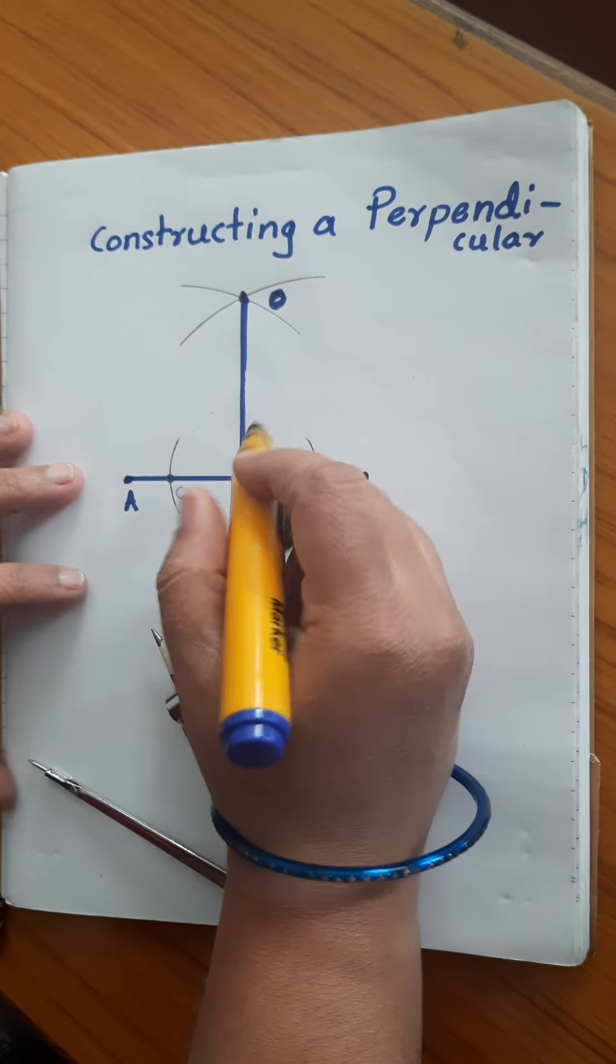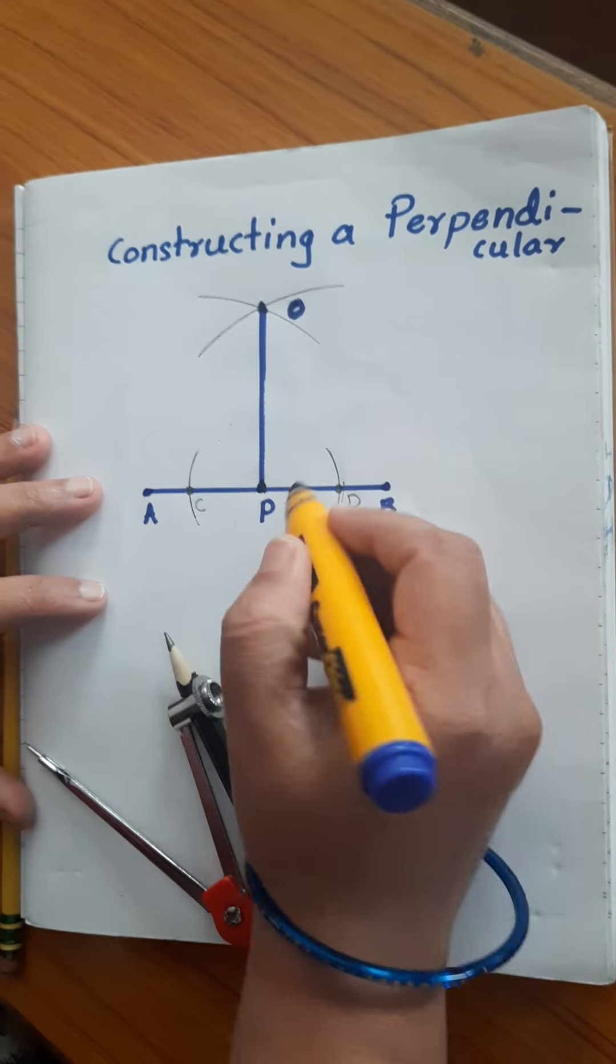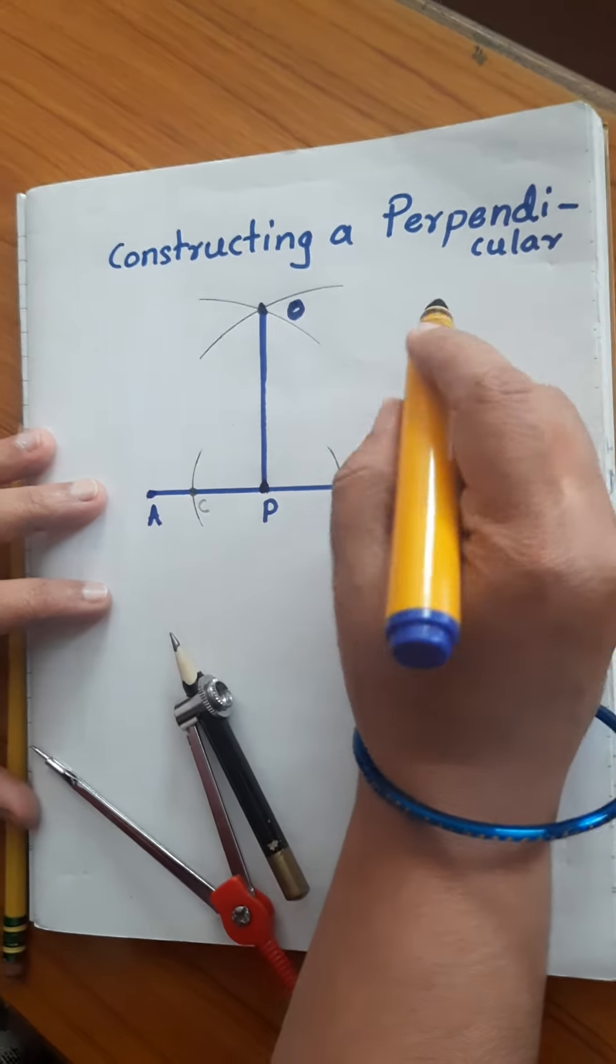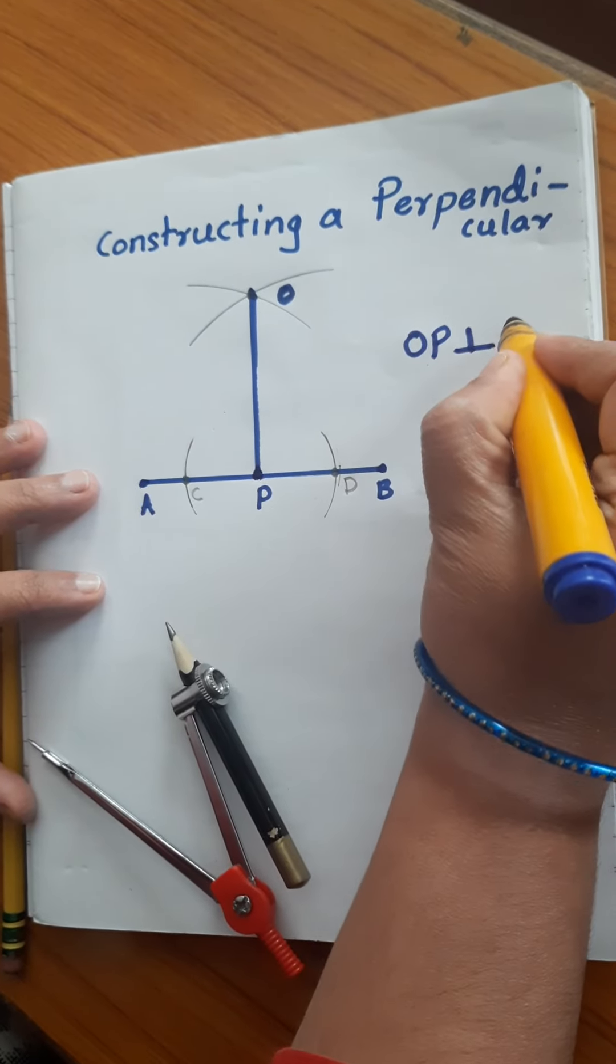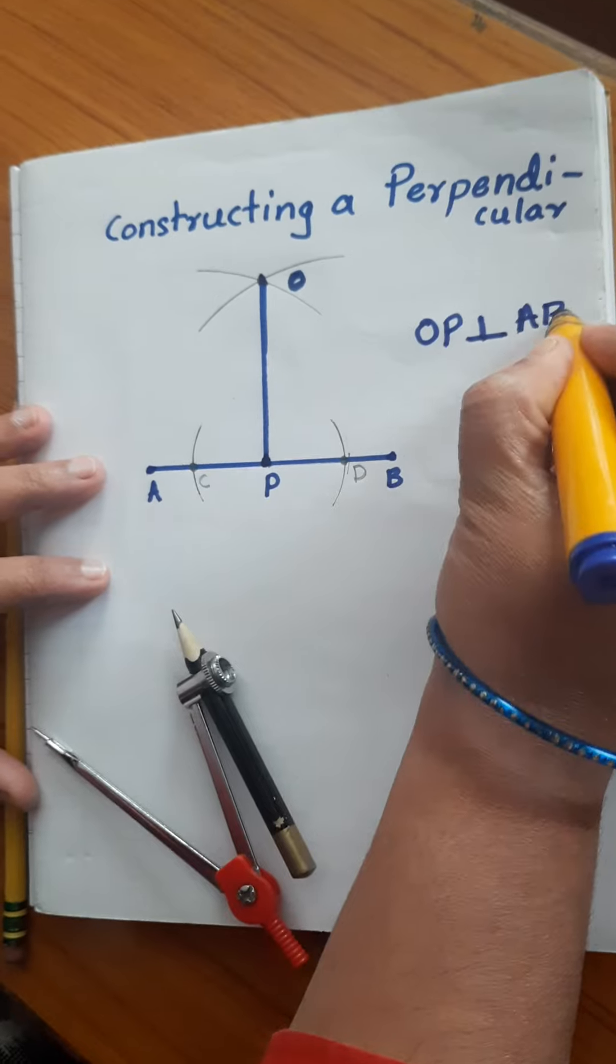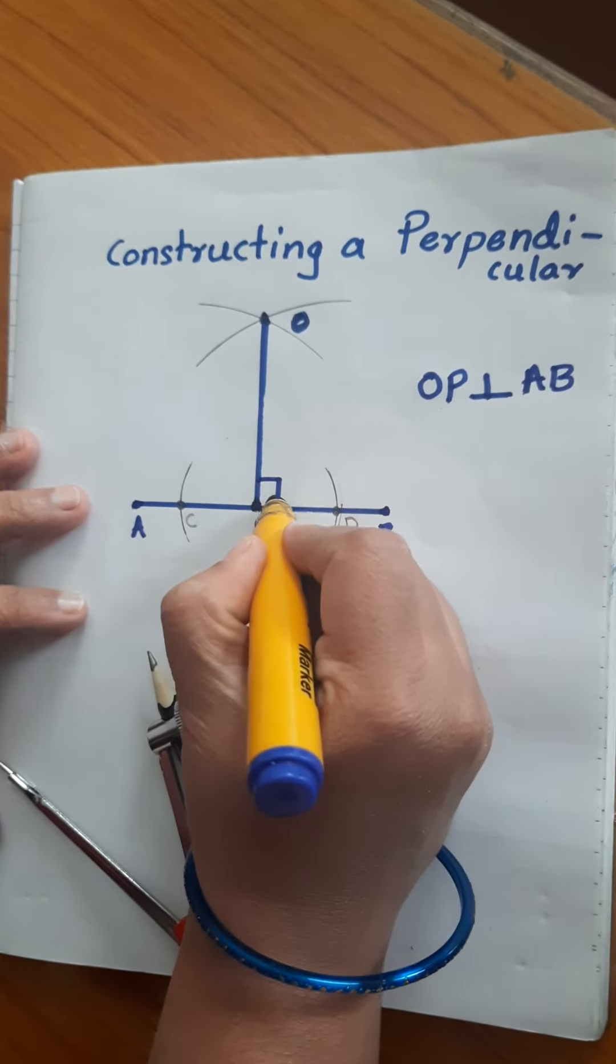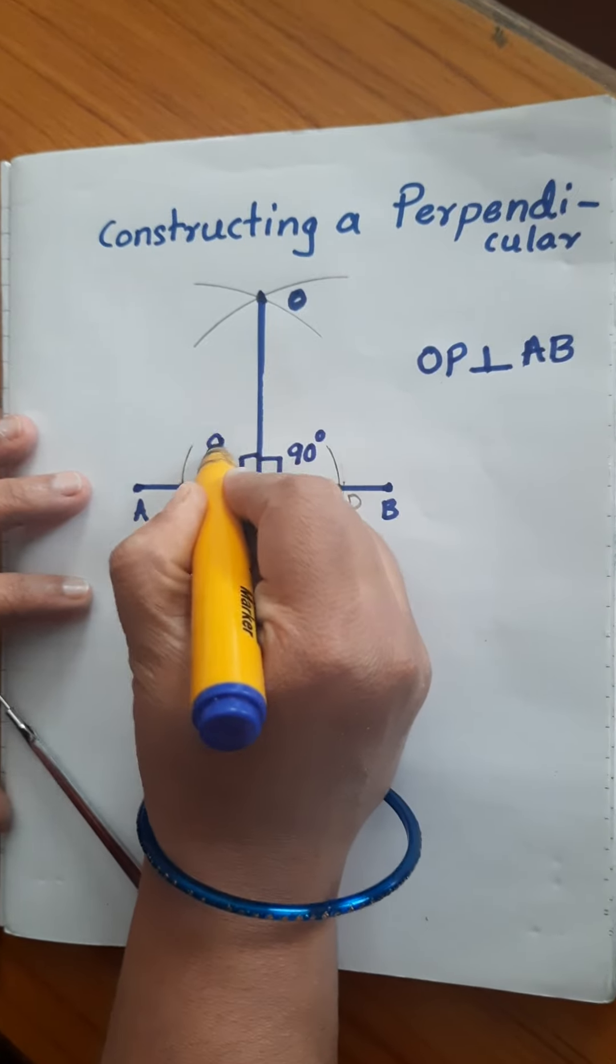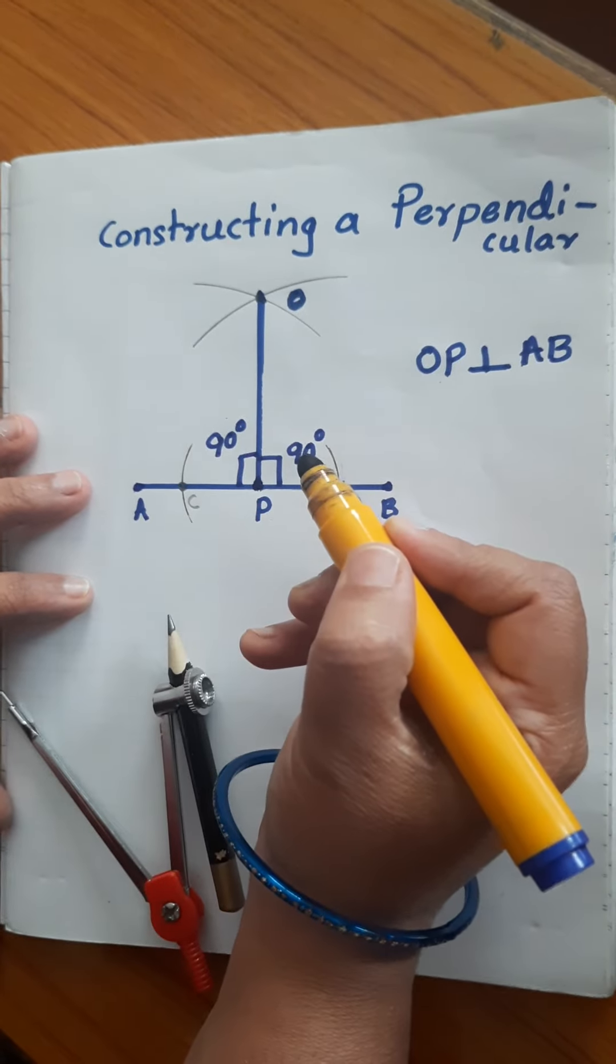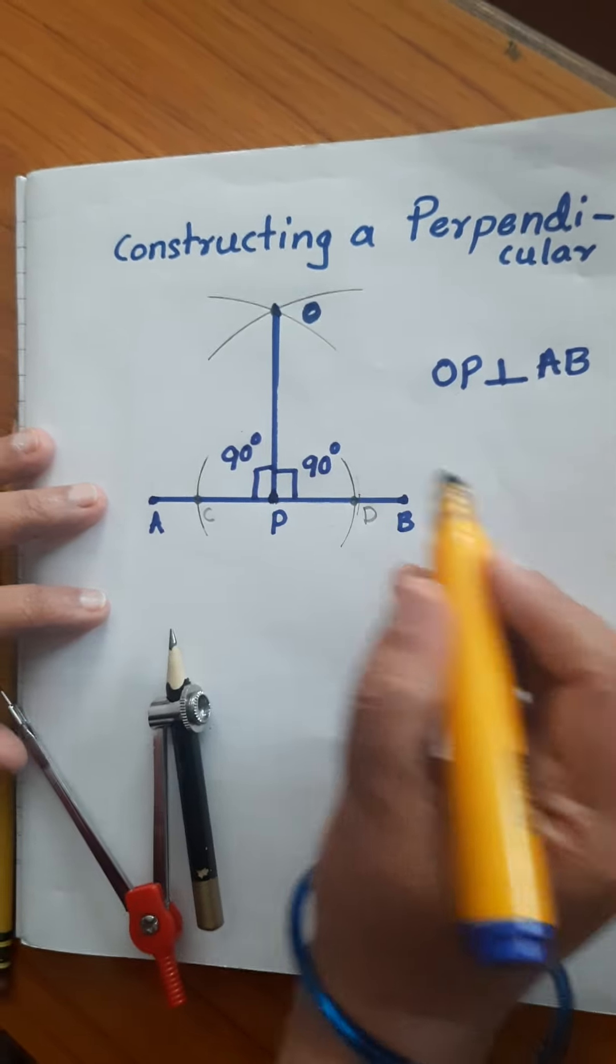Now from the O point, join to P. Now this is a perpendicular to line AB. We can write it as OP is perpendicular to AB line. This side it will form a 90 degree angle and the other side also will form 90 degrees. This construction has the point on the line.